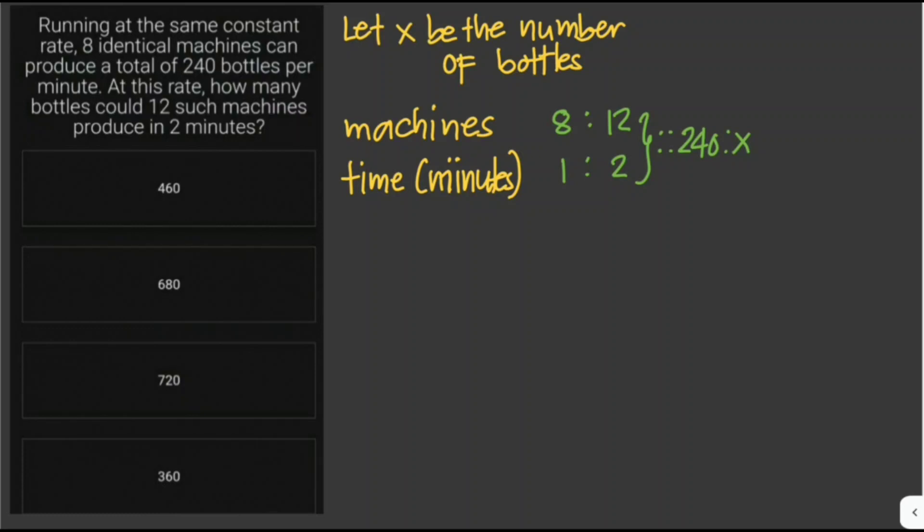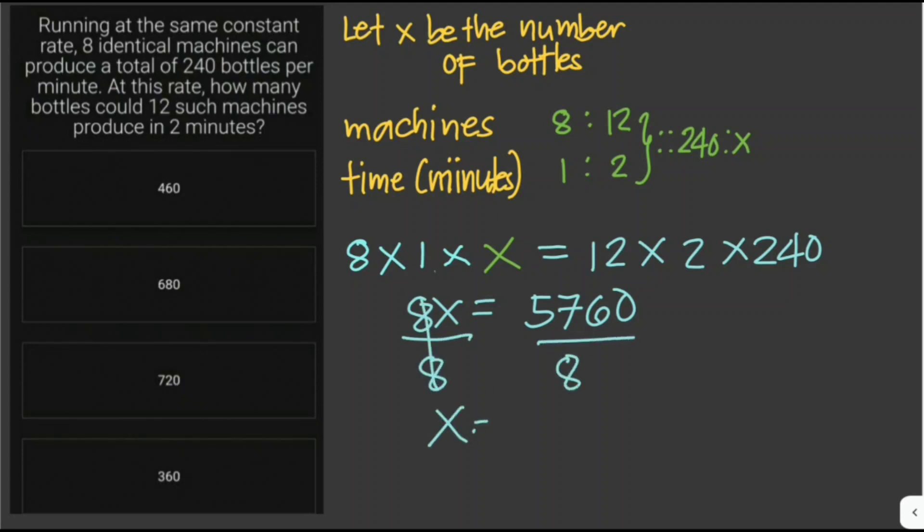So we can use direct proportion here. We multiply the number of machines times the number of minutes they produce. The unknown number of bottles equals 12 times 2 minutes times 240. Then we have 8x equals 5760. And we divide both sides by 8, and we get 720. So the answer is 720 bottles that will be produced by those 12 machines in 2 minutes.